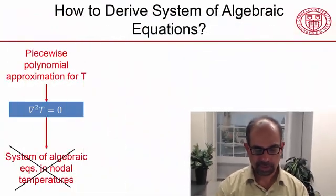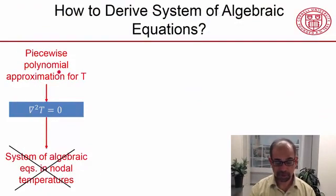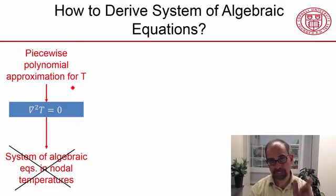How to derive the system of algebraic equations? We have our piecewise polynomial approximation for the temperature, an assumed shape constructed element by element. If we plug it into the differential equation, we won't get our algebraic equations, as we saw in the 1D case. The same thing applies in 2D.